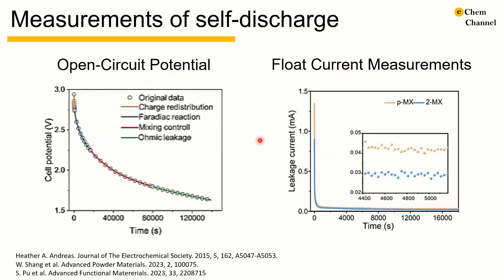The evaluated system can either be a half cell with working, counter, and reference electrodes to separate the potential drop caused by the negative and positive electrodes, or a full cell to understand a practical situation. In all cases, the system is first charged to the desired potential for a half cell or voltage for a full cell. For open-circuit measurement, the system is placed in an open-circuit configuration after charging, and the potential is recorded over time. In float current measurement, after the desired charging potential is reached, a small current — also called the float current — is fed into the system to maintain constant voltage, and the float current is recorded as a function of time.